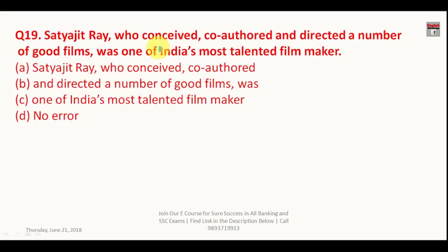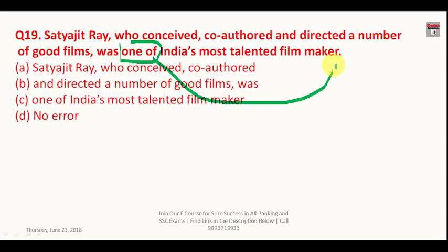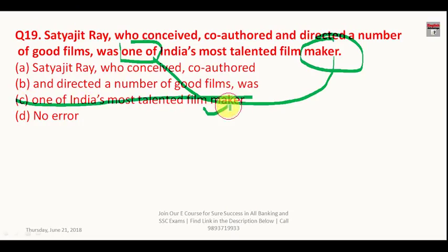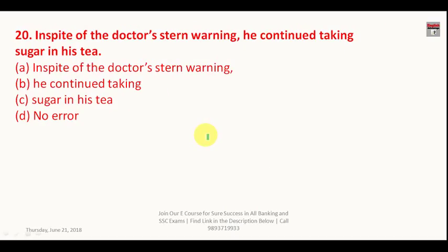Question number nineteen: 'Satyajit Ray, who conceived, co-authored and directed a number of good films, was one of India's most talented filmmaker.' Always remember that 'one of' is followed by a plural noun. So 'filmmaker' must be changed to 'filmmakers.' The C part is wrong and the answer is C.